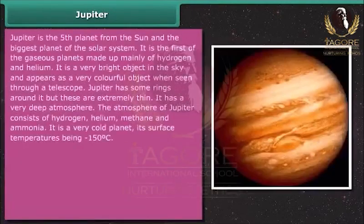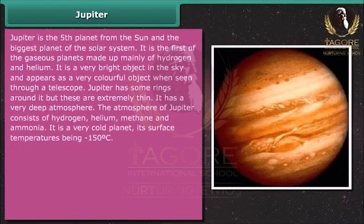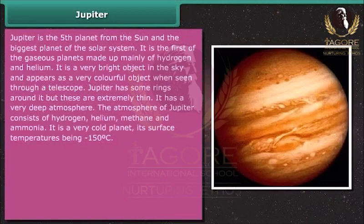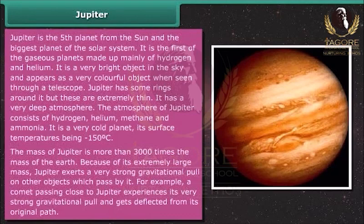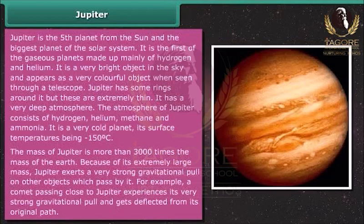Jupiter is the fifth planet from the Sun and the biggest planet of the solar system. It is the first of the gaseous planets, made up mainly of hydrogen and helium. It is a very bright and colorful object when seen through a telescope. Jupiter has some rings around it, but these are extremely thin. Its atmosphere consists of hydrogen, helium, methane, and ammonia, and its surface temperature is minus 150 degrees Celsius. The mass of Jupiter is more than 3,000 times the mass of the Earth. Because of its extremely large mass, Jupiter exerts a very strong gravitational pull on other objects passing by — for example, a comet passing close to Jupiter gets deflected from its original path.